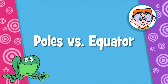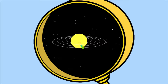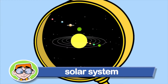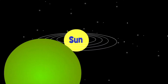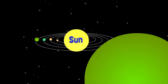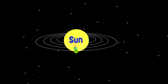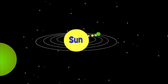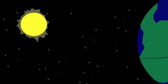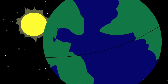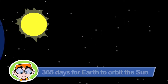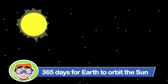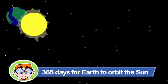Poles vs. Equator. To best understand, we have to take a look at our solar system. The sun is part of our solar system. The earth and seven other planets, moons, comets, asteroids, dust and gas move around the sun. The sun is the largest object in our solar system. Just like everything else in our solar system, the earth travels or orbits around the sun. It takes the earth 365 days, or one whole year, to orbit one time around the sun.